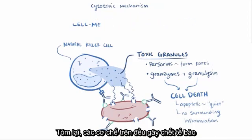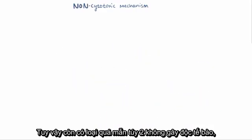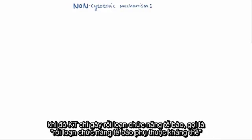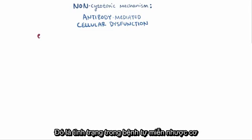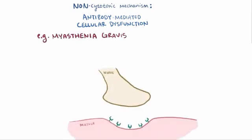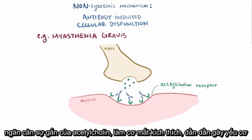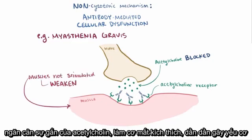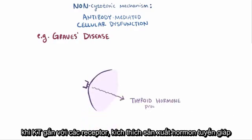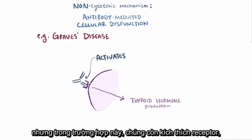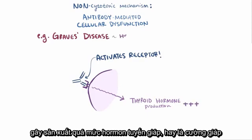So far all the mechanisms have led to cell death or cytotoxicity, but there are also non-cytotoxic type 2 hypersensitivities, where the antibody disrupts function — called antibody-mediated cellular dysfunction. Sometimes when an antibody binds to its antigen, it just gets in the way and changes the way the cell functions. This is the case in myasthenia gravis, where antibodies specific for the acetylcholine receptor in muscles block acetylcholine binding, causing muscles to not get stimulated and progressively weaken. This mechanism is also involved in Graves' disease, where antibodies target receptors that stimulate thyroid hormone production — but here they actually activate the receptors, causing overproduction of thyroid hormone, or hyperthyroidism.